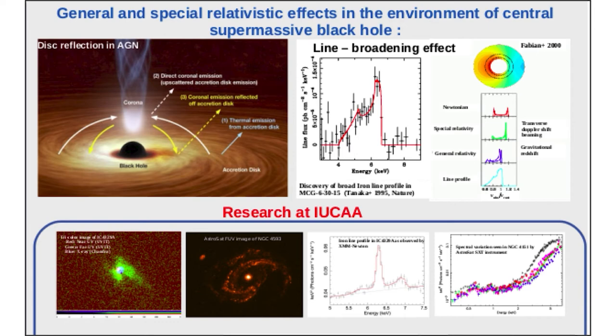The ongoing research at IUCAA are as follows. First in the figure, we can see a UVIT image of one of the bright AGN, IC4329A, where we have plotted a color image observed with FUV, NUV, and X-ray. The X-rays are observed with Chandra, and FUV and NUV are observed with UVIT. Second figure, here we have plotted the FUV image of another AGN, NGC4593.